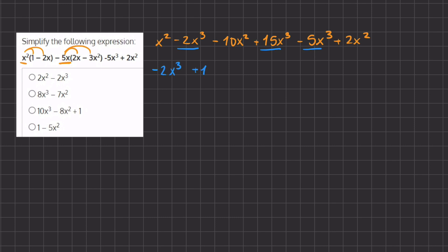Writing this out: negative 2x³ plus 15x³ minus 5x³. Once we add all these up, we have negative 2 plus 15, which gives us positive 13, and 13 minus 5 leaves us with positive 8x to the third.